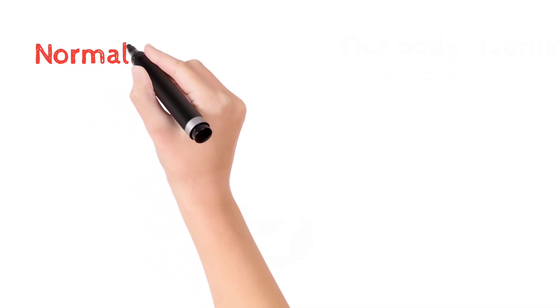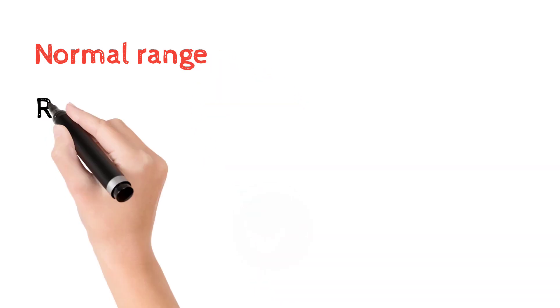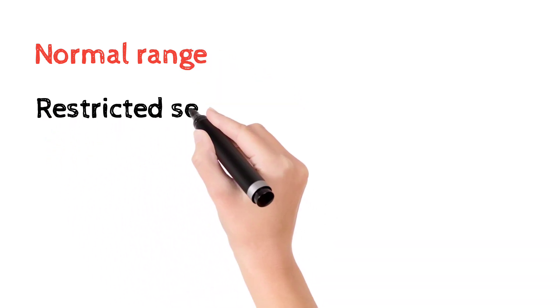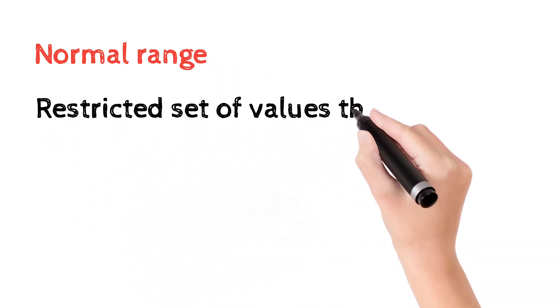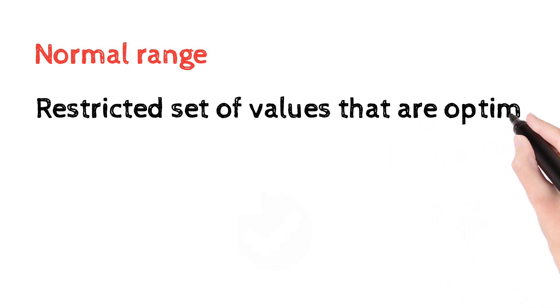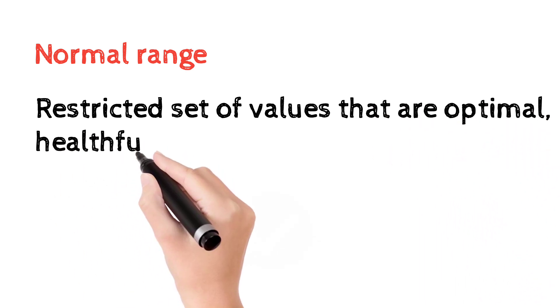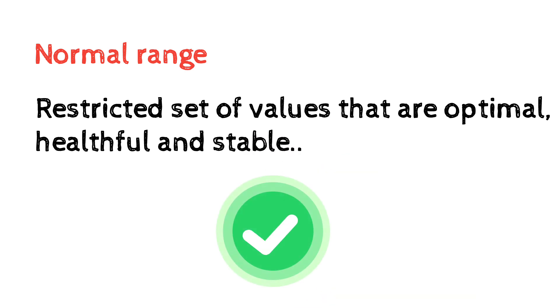So the normal range around the set value is the optimal range. It's a restricted set value - only this particular value which is optimal, so that it is helpful to our body.